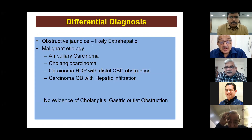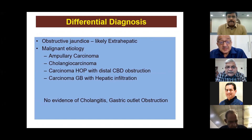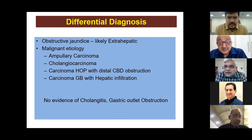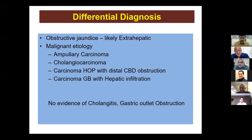Moving to the differential diagnosis slide. Why did you keep ampullary carcinoma as number one in your sequence? The student responds: short history and painless progressive jaundice. Faculty point out: ampullary is relatively slow-growing. Furthermore, absence of pain was used as an alibi against intrahepatic cholestasis, and now the same argument is being used to favor ampullary carcinoma - you cannot use the same argument in both directions.